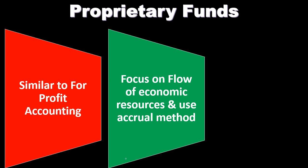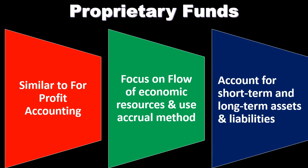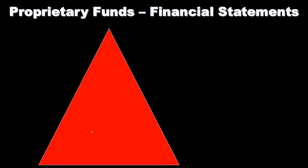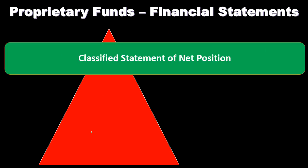Therefore, as we go through the accounting for proprietary funds, it should look more familiar. As we use the accrual basis, these funds will account for both short-term and long-term assets and liabilities, which is different from the governmental funds. Governmental funds, the largest grouping, use a modified accrual basis, meaning we don't typically see long-term assets and liabilities there. Here, using the accrual basis, we will see the breakout in both the asset section and liabilities section for short-term and long-term.